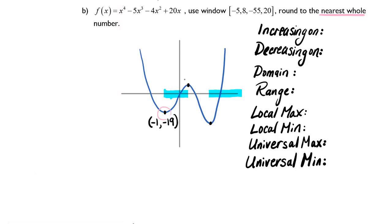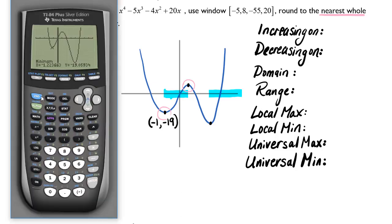Now let's find this maximum, the second interesting point on our graph. We will go to second, calc, maximum, enter. It wants a left bound. So I'm going to arrow as close to this as I think I can get without causing errors with the pixelation on the calculator. Hit enter.